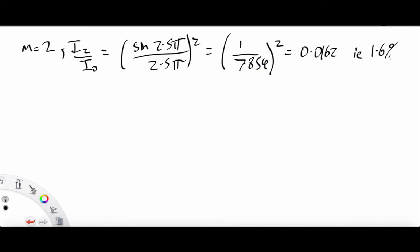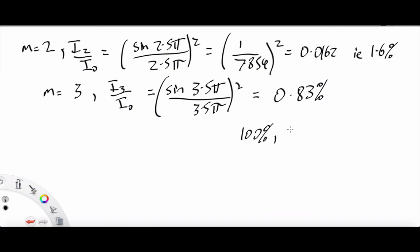And the third, I3 over I naught equals sin of 3.5 pi over 3.5 pi squared equals, well, it comes to 0.83%. So if we take the central is 100%, we go 4.5%, you can see that they are dropping off rapidly in intensity.